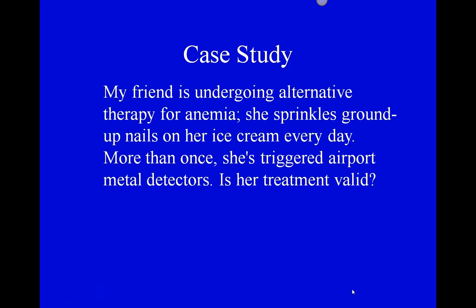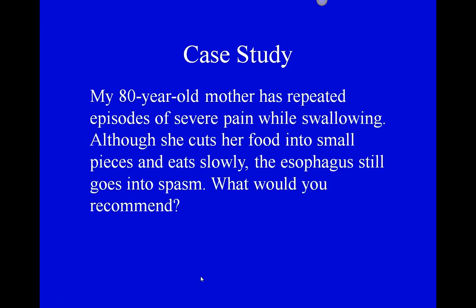If you have anemia and take iron by eating ground-up nails, that iron is not digestible and most just passes through the bowel. Here's a woman who has problems swallowing even though she cuts her food into small pieces. We could do an upper GI, or we could focus specifically on a swallow evaluation - putting the patient in a fluoroscopy moving x-ray while they swallow contrast media, then watching how the esophagus processes it.